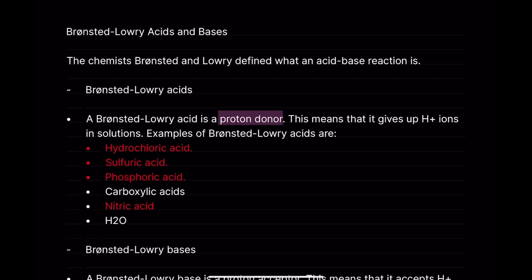Hydrochloric acid, sulfuric acid, phosphoric acid, and nitric acid would dissociate more H+ ions in solution. In a solution of 1 mol per dm³, nearly all of the hydrochloric acid would dissociate completely into H+ and Cl−. The key principle is that strong acids fully dissociate all H+ ions in solution.